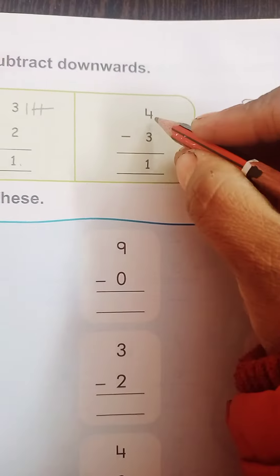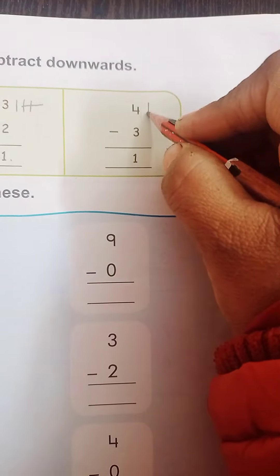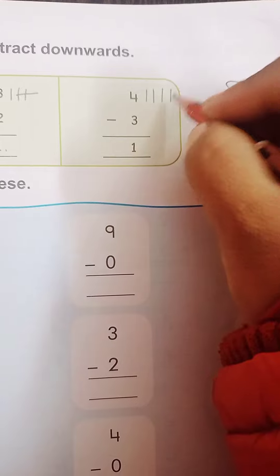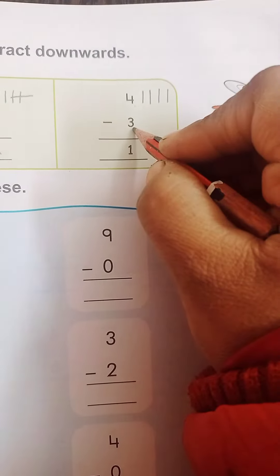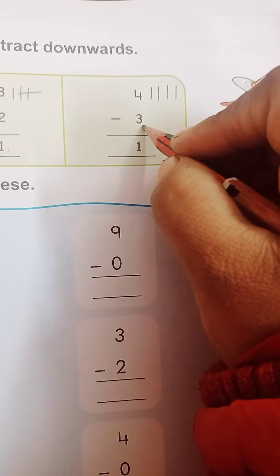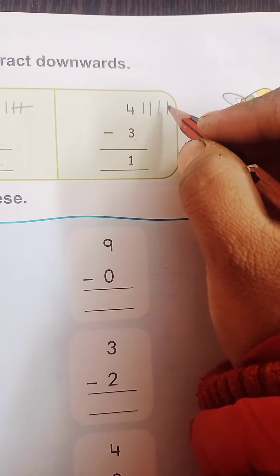Which number is this? 4. So, how many lines we will draw? Yes, 4 lines, okay? And, which number is here? 3. So, now, what we will do? We will cut 3 from this 4 lines, okay?